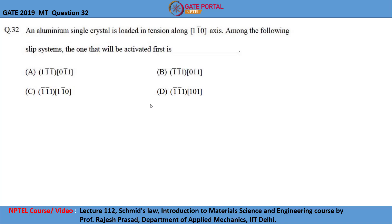Let us now look at a 30-second question from GATE 2019. The question is: an aluminum single crystal is loaded in tension along the [1 1̄ 0] axis. Among the following slip systems, we need to find the one that will be activated first.